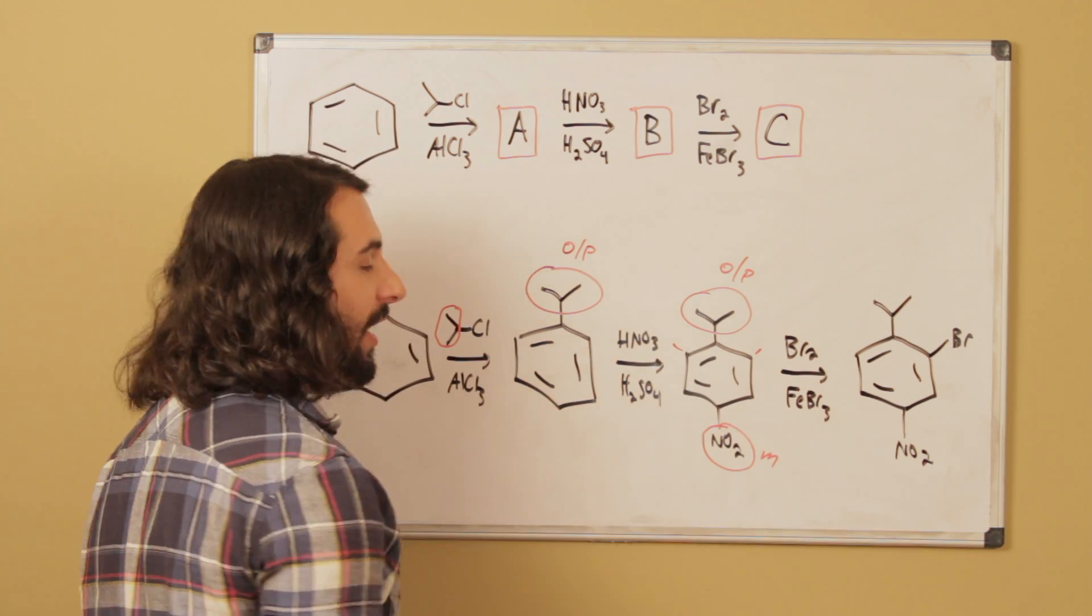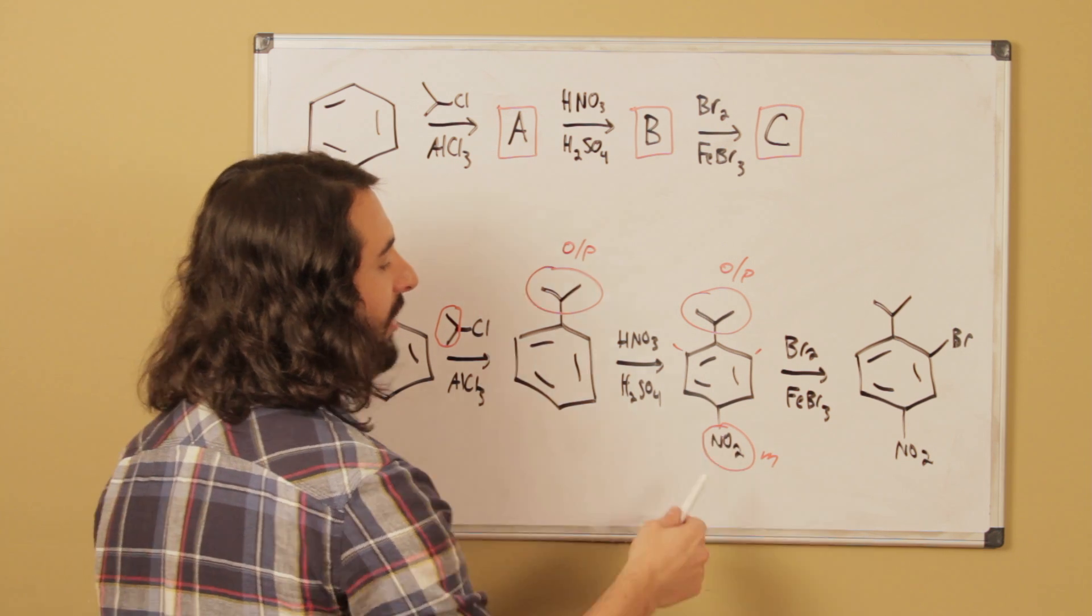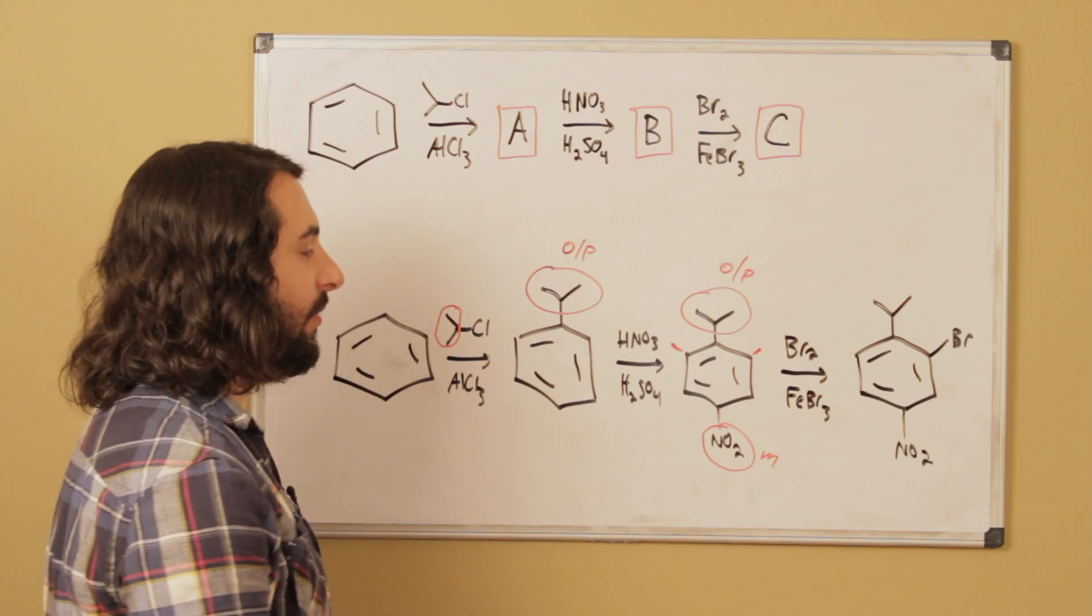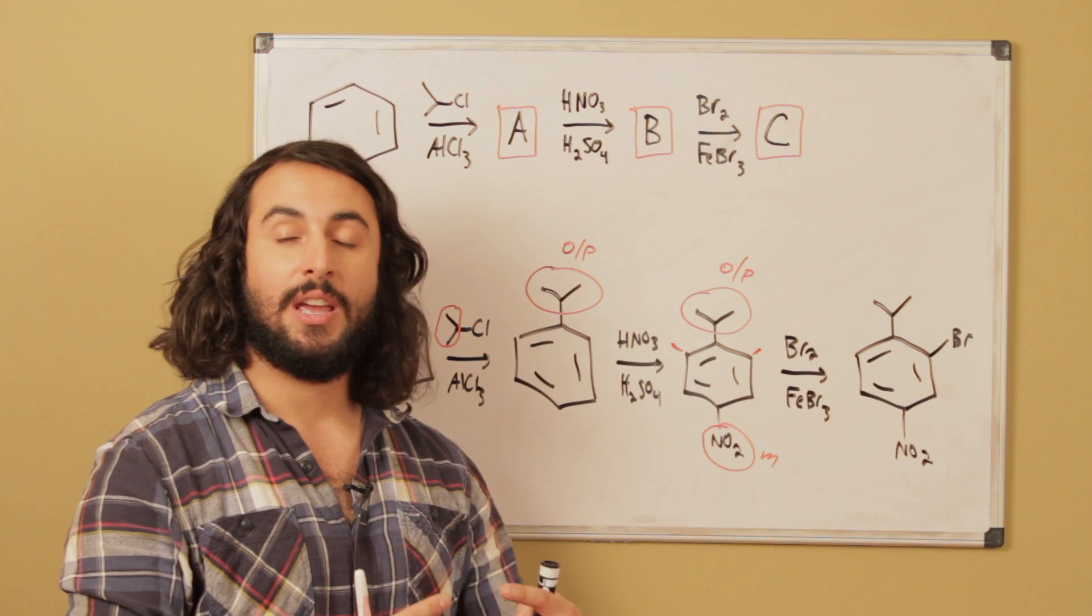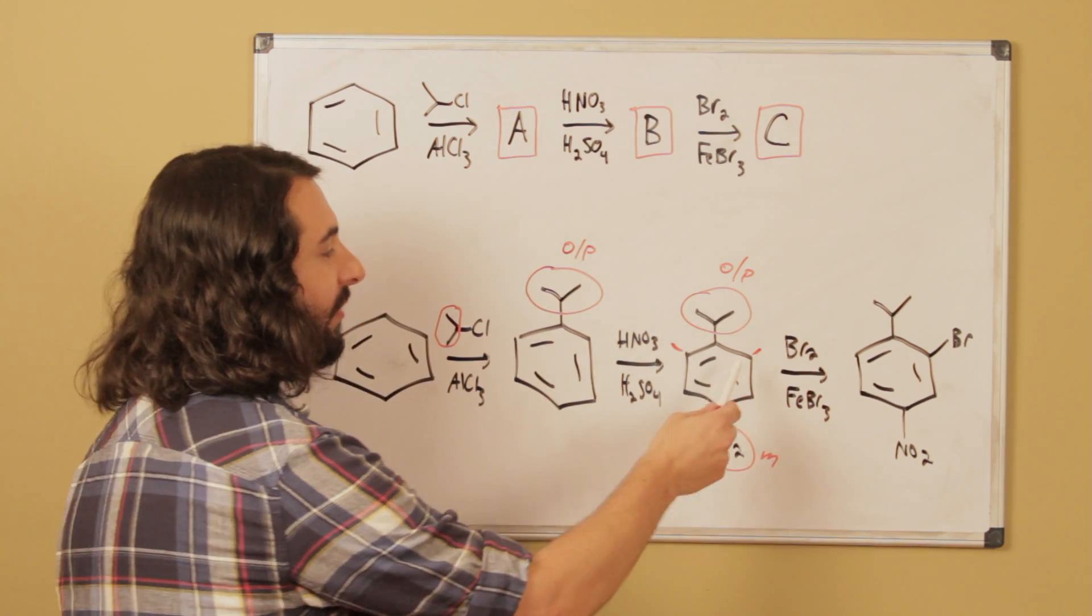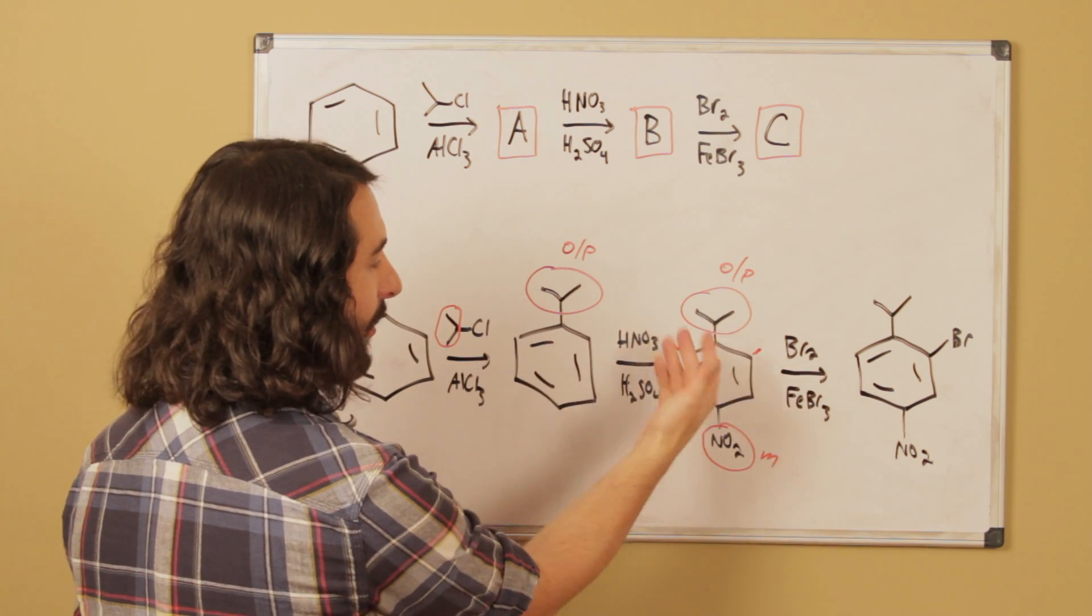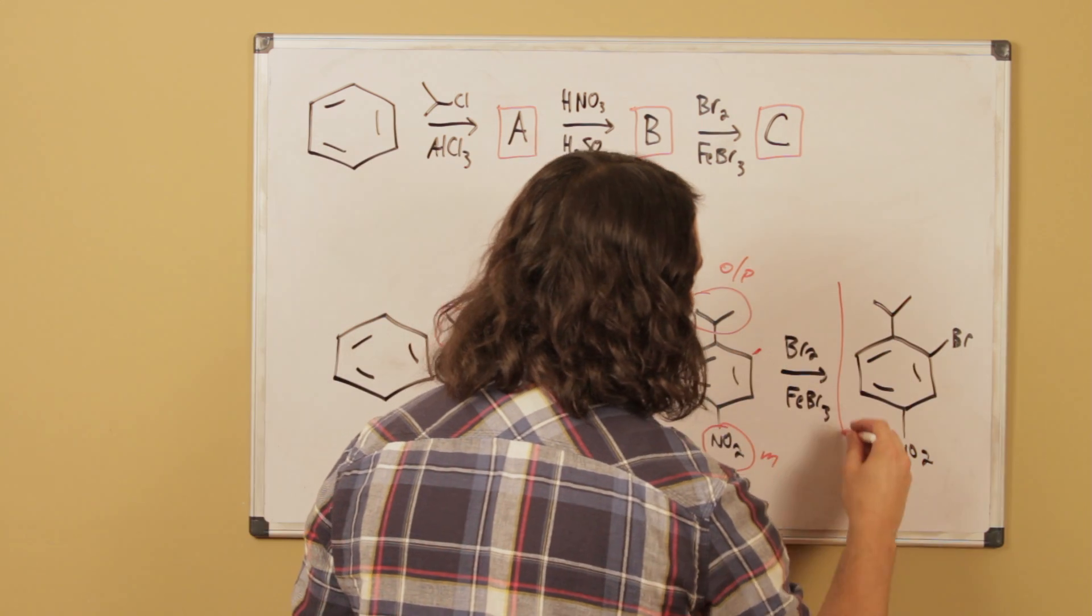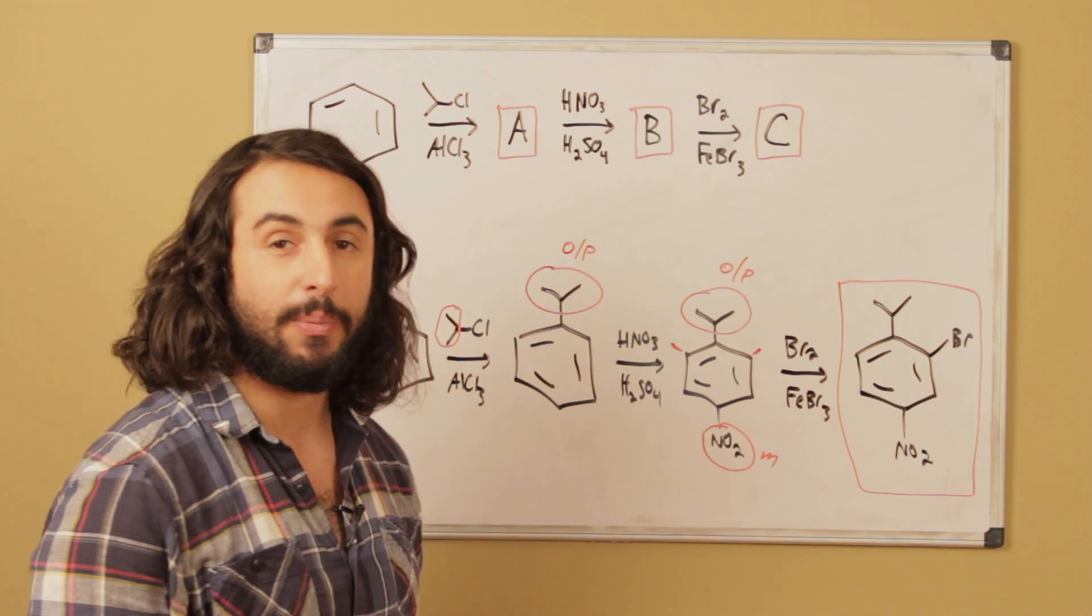And then in terms of being a meta director, the nitro group is also directing the incoming electrophile to those positions. So fortunately in this case, the two groups agree about where the incoming electrophile has to go. And in addition, both of these are chemically equivalent positions because if you put it here, flip it over, it's over there. So they both result in the same product, and so this is going to be one possible product for this sequence of transformations.